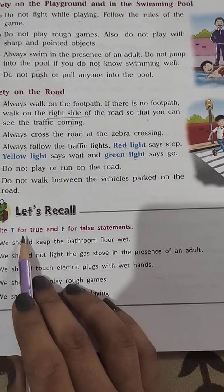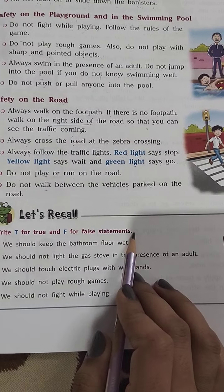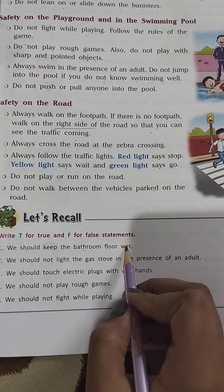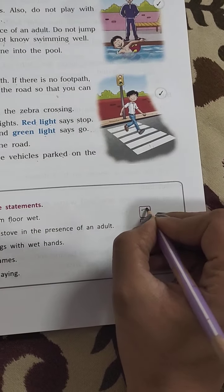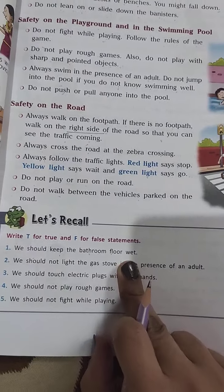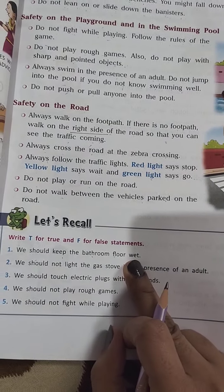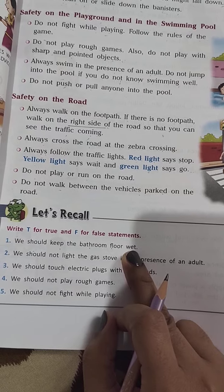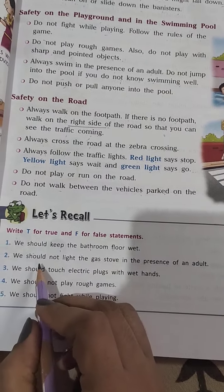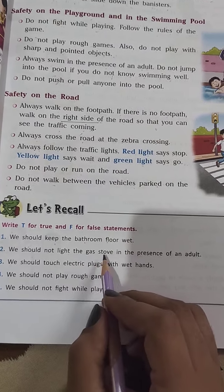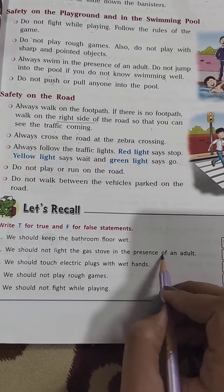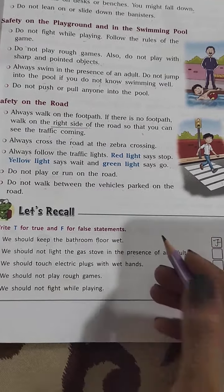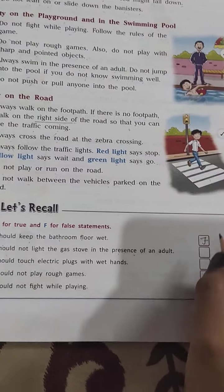Now let's recall. Write T for true and F for false. Statement one: we should keep the bathroom floor wet — this is false, because if we keep the bathroom floor wet we can slip, so we should always keep it dry. Statement two: we should not light the gas stove in the presence of an adult — this is also false.